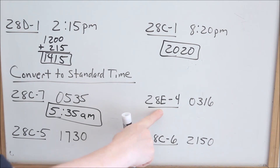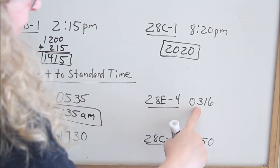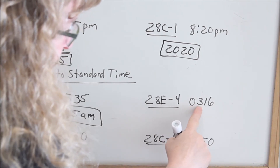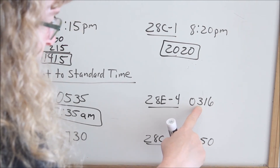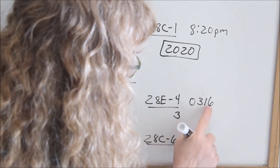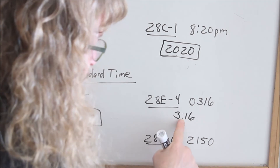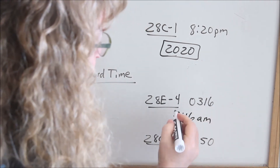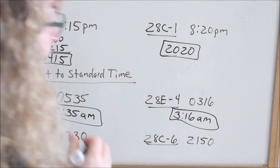Looking at 0316 — the first two columns give your hour: that's the 3rd hour of the day, so we're still in morning, still a.m. Then your 16 is your minutes. In standard time, we do use a colon. Because it's the 3rd hour of the day, we're still a.m. — still in the morning before noon. So that's 3:16 a.m.